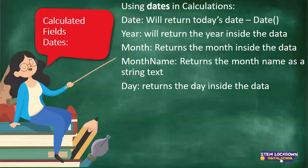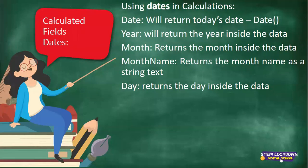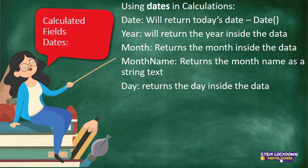Now we go to using dates in calculations — something people love not to do. There are five date-related functions. DATE returns today's date. YEAR returns the year from a date field. MONTH returns the month number. DAY returns the day number. MONTHNAME returns the month as a text string — for example, January, February, March. Except for DATE, the others all require a date field as input and return a number.